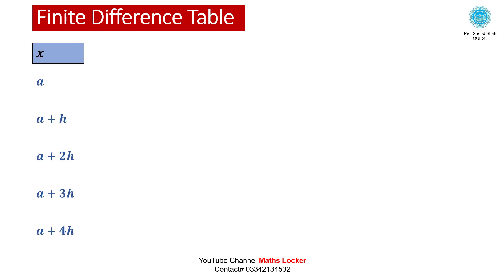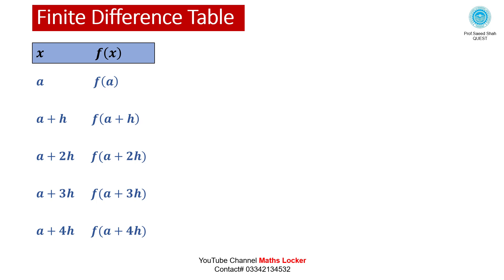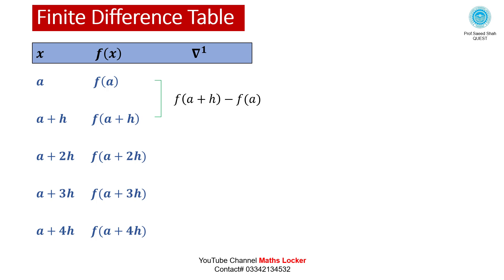We are writing the values of the independent variable x in the first column and f(x) in the second column. We have 5 points, so 5 minus 1 means 4 differences to compute. The first difference is del1. For the backward difference, del f(a) equals f(a+h) minus f(a).